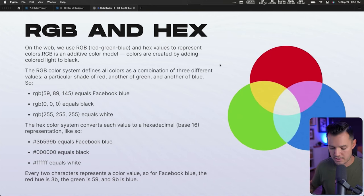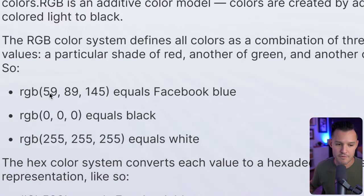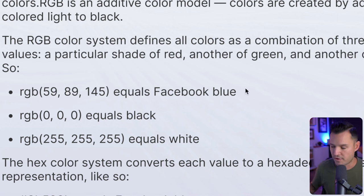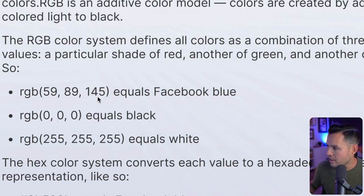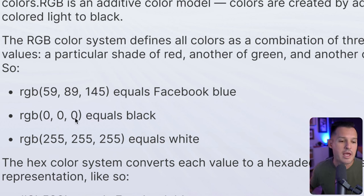For instance, RGB 59, 89, 145 equals Facebook blue. This makes sense because it's primarily blue, and those red and green values are tweaking or changing the quality of that blue.